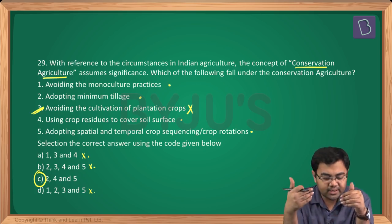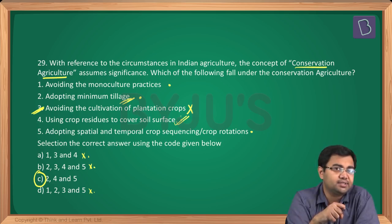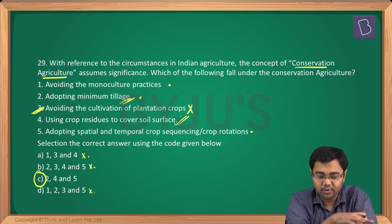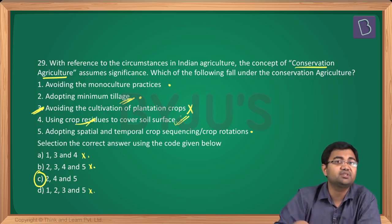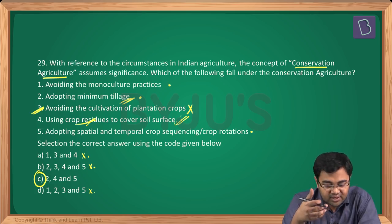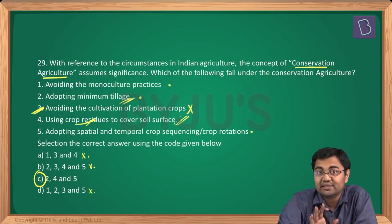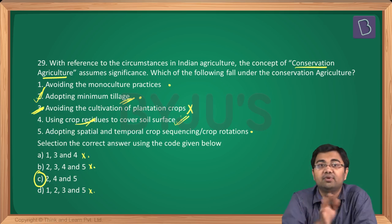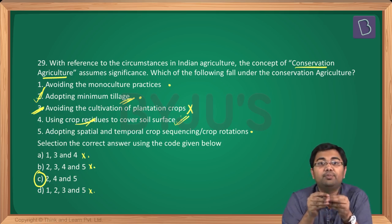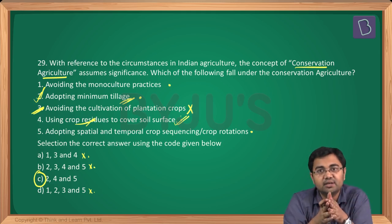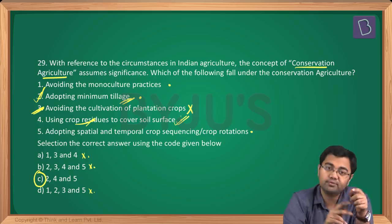Conservation agriculture involves three key principles: covering the soil with crop residue or cover crops; minimizing soil disturbance by keeping tillage to just enough to get the seed into the ground; and regular crop rotation. The instructor is uncertain why statement 1 about avoiding monoculture was not included as correct, since crop rotation and avoiding monoculture go hand in hand. But since statement 3 is wrong, option C — statements 2, 4 and 5 — is the only remaining answer.